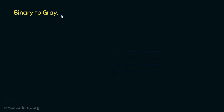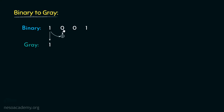Let's now move on to binary to gray conversion. Say we have the binary number 1 0 0 1. First, we keep the MSB as it is. For the remaining bits we perform XOR between adjacent bits. We take the MSB and XOR it with the next bit — since these two bits are different, we obtain 1 as the second gray bit.